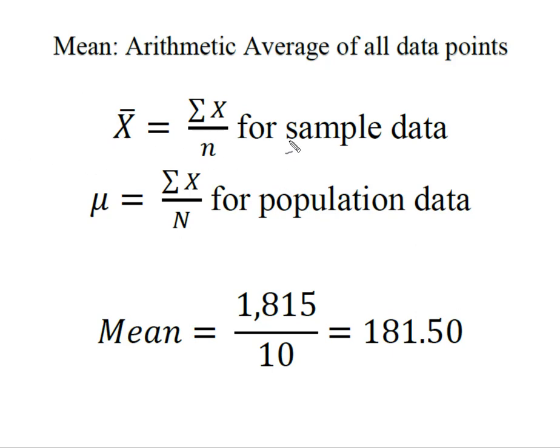So when we have sample data we are going to calculate the mean and then represent it by x bar. So we're going to sum, that's what this big sigma means, sum all values of x and divide it by n. And that's because small n always represents the number of observations in our sample. If we had population data then the mean would be represented by the Greek letter mu. We would calculate it the same way. We would sum all x's but we would divide it by a capital N because capital N represents the number of observations in a population. So you can see that the calculation does not differ however the notation does.